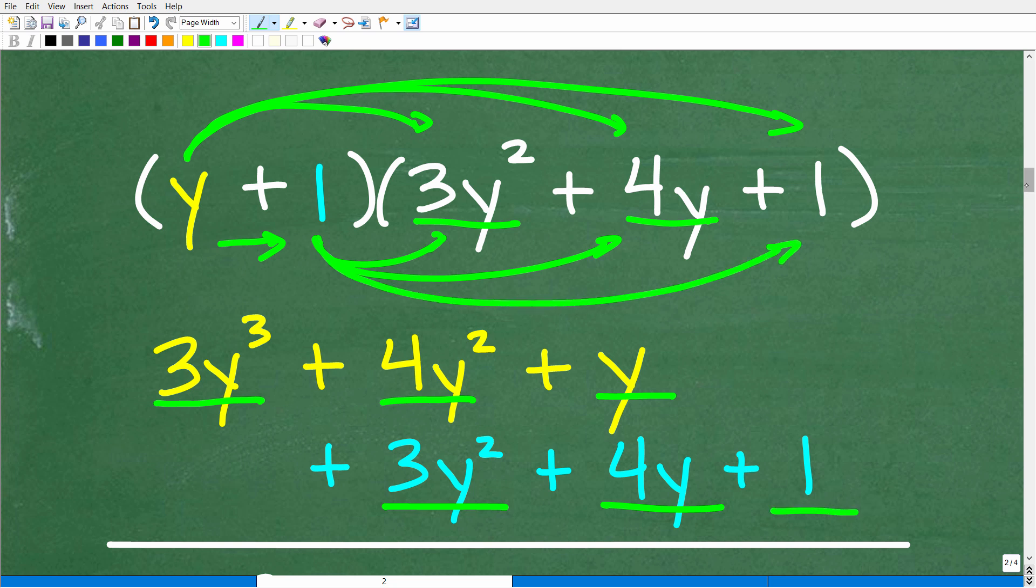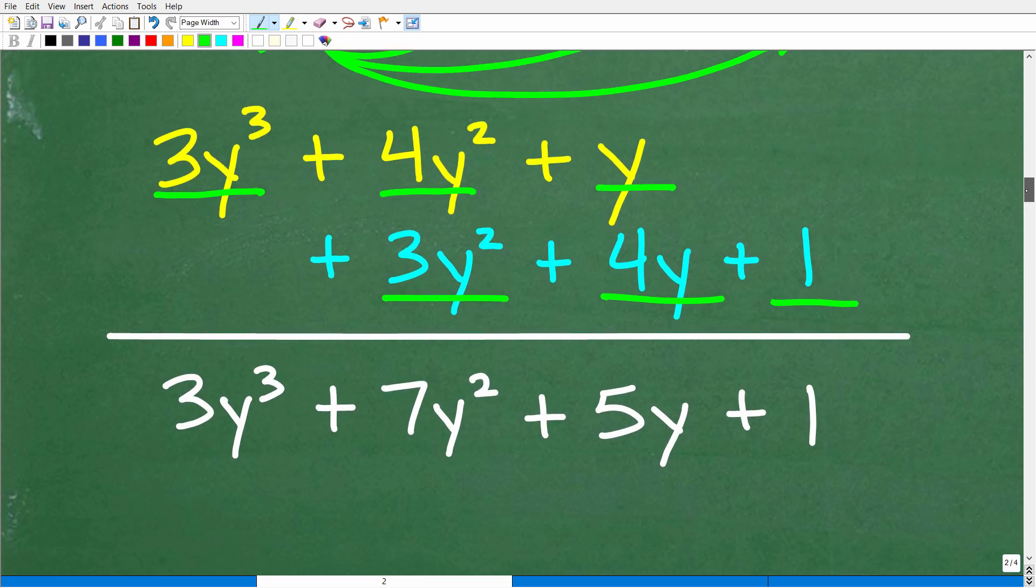All right, so all we have to do now is add like terms. So this is pretty straightforward. So we have 3y cubed. This is going to be the leading term because we have no other y cubed. So we have 3y cubed plus we have 2y squared. So these two here are like terms. So 4y squared plus 3y squared is 7y squared. So this is what comes next. And then we have 1y plus 4y. Of course, that is 5y plus 1.